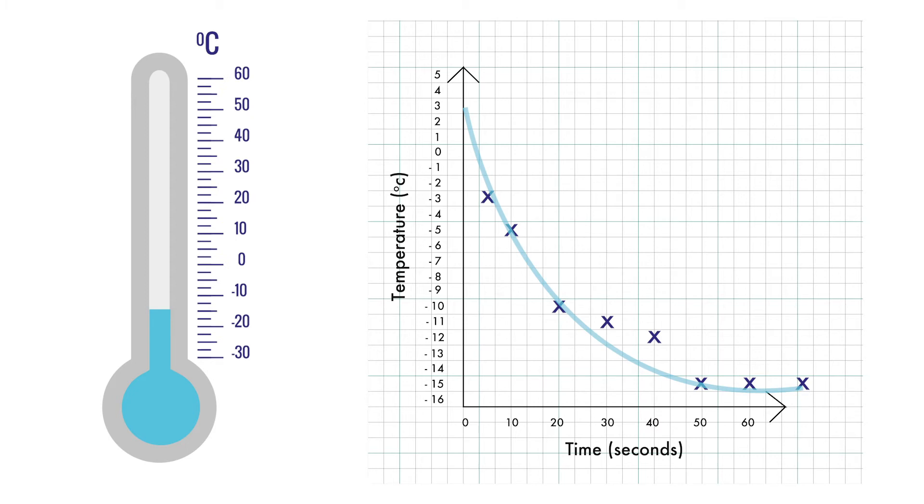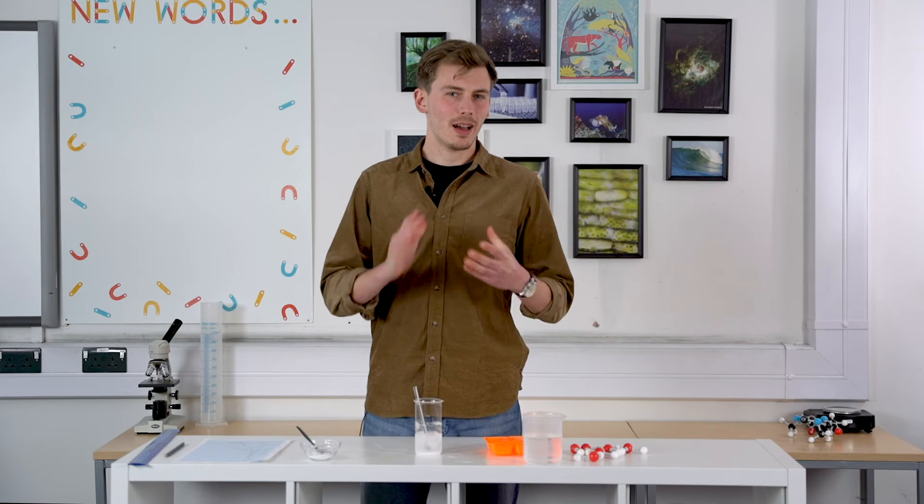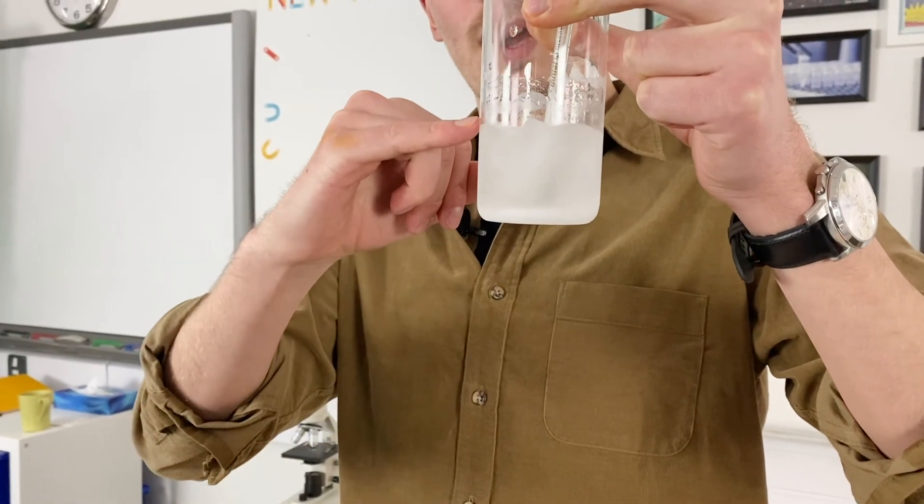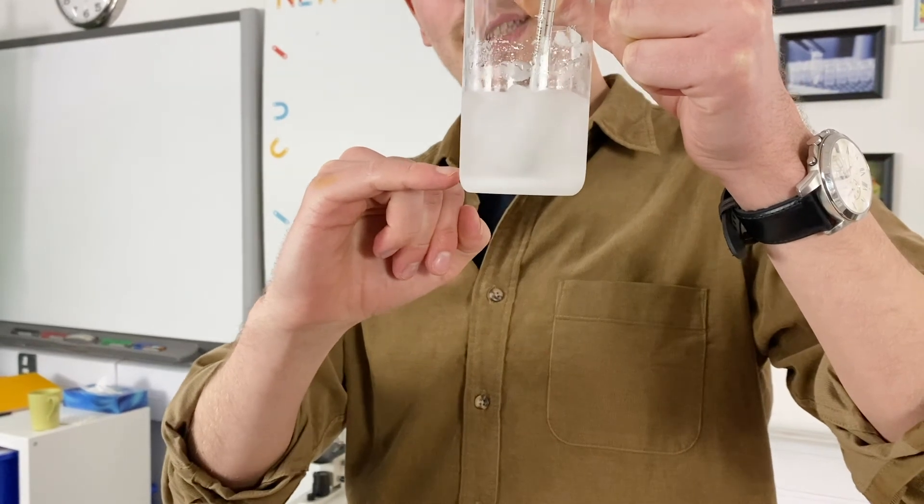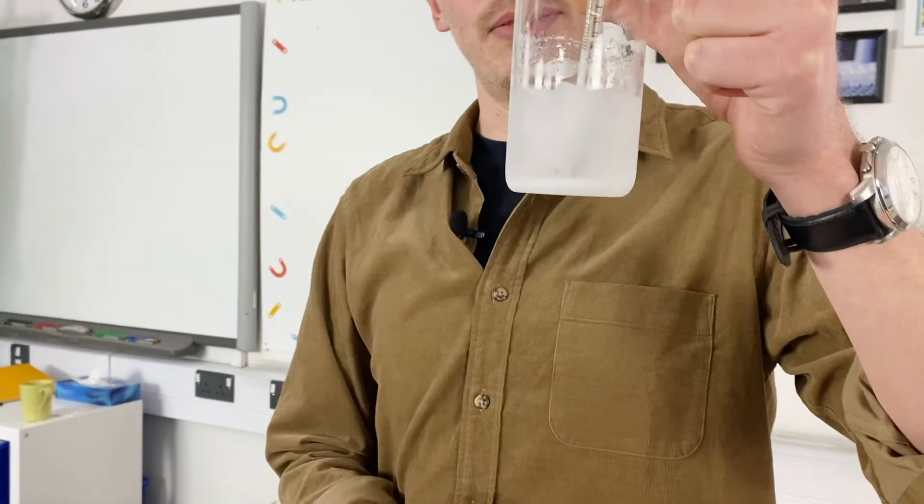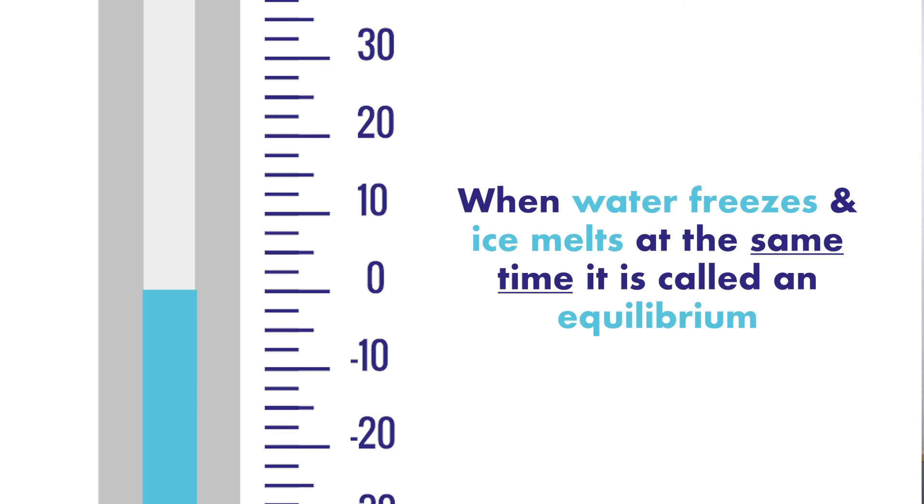So why is it that despite the temperature dropping to minus 15 for quite a long time, did the ice continue to melt? Because you can see our water level has shot way up. So we started with the water level right down here, more of a puddle, and it's risen up to there. And at the same time, the ice cubes have melted down. So earlier, we said that around that zero degree mark, we've got ice melting, and we've also got water freezing. So when both of those things happen at the same time, that's called an equilibrium.